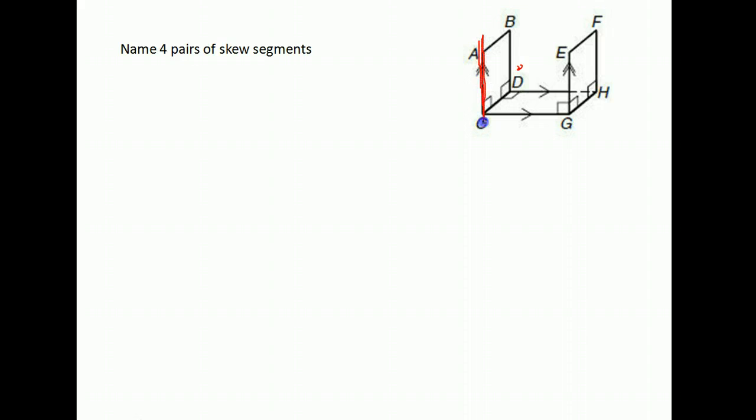So let's take for example, let's start with AC here. It would be skew to, it's going up and down on the left side. This GH is going front and back on the bottom. They're on different planes going different directions, but they will never intersect because they're on those different planes. AC and GH would be a pair of skew segments.